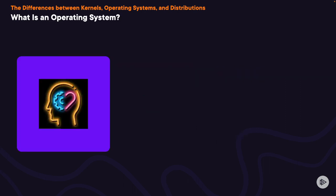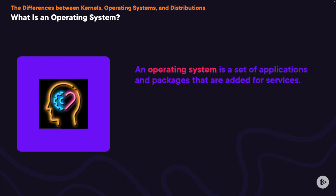What is an operating system? An operating system is a set of applications and packages added for services. It provides functionality for scheduling tasks, executing applications, and controlling peripherals. An OS includes the kernel and also system services, applications, and user accounts so that users can interact within that system.